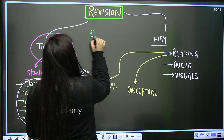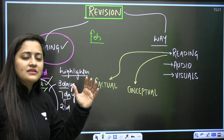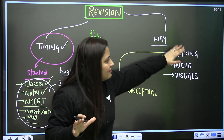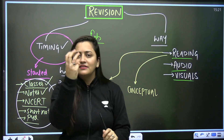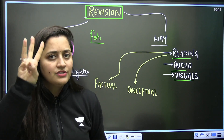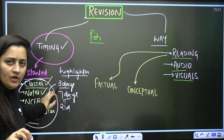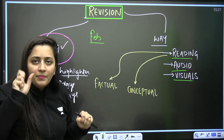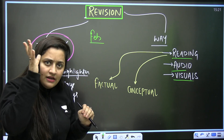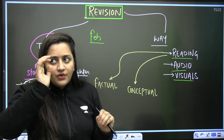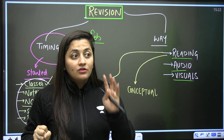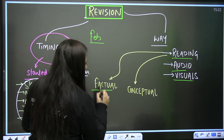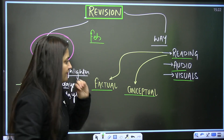Now, being in February, we need to revise the complete syllabus — physics, chemistry, and biology. There are three ways to revise: reading, audio, and visuals. First, you have to decide what type of topic you are doing. In all three subjects, there are chapters where concepts need to be very strong, and chapters where it's all about memory — facts you have to remember. So divide your data: is it factual or conceptual?